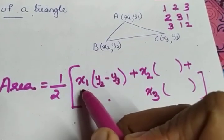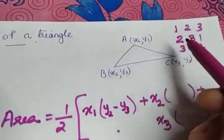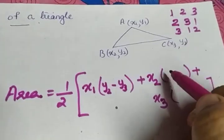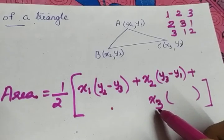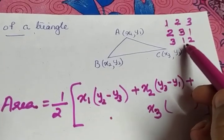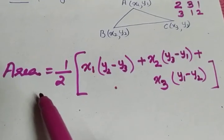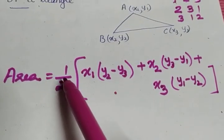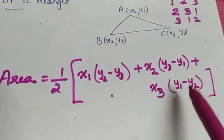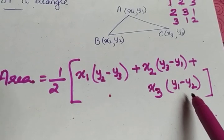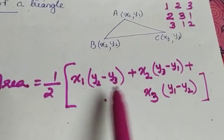The outside term is the x-term and the bracketed term is the y-term. So the formula is: area = half into x1 times (y2 minus y3) plus x2 times (y3 minus y1) plus x3 times (y1 minus y2). This is the formula to find the area of a triangle when the vertices are given. Don't change the order and don't reverse the signs.